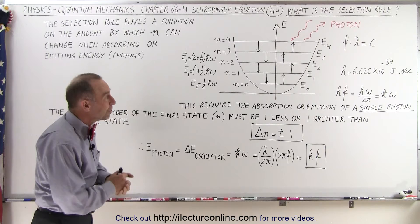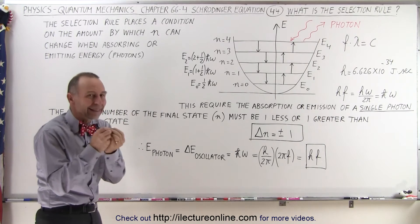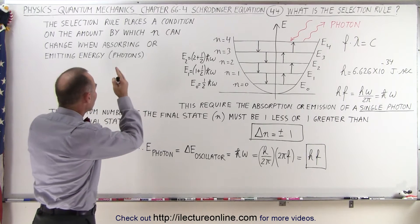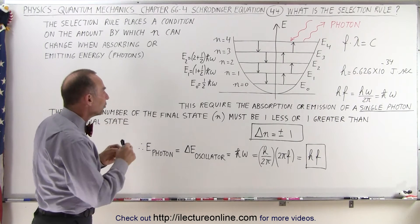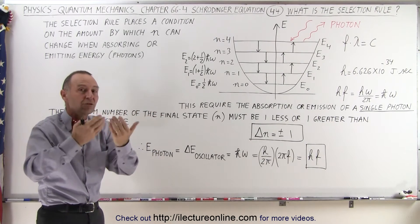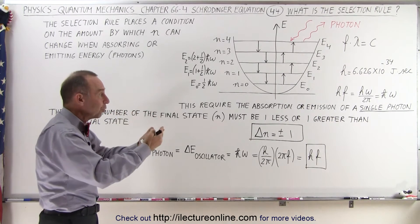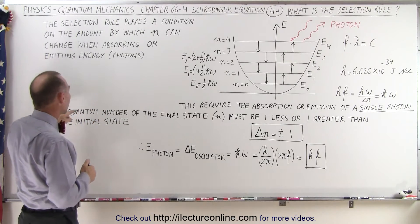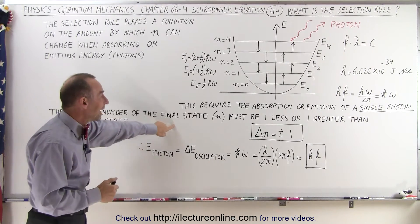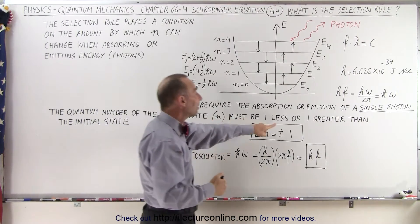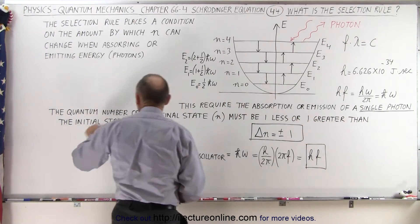Of course, in this case, energy typically would be photons. So, what is that limit? That's the key. The key to the selection rule is that there's a specific limit. Since the absorption or emission of energy is by the absorption or emission of a single photon, the quantum number of the final state must be one less or one greater than the initial state.